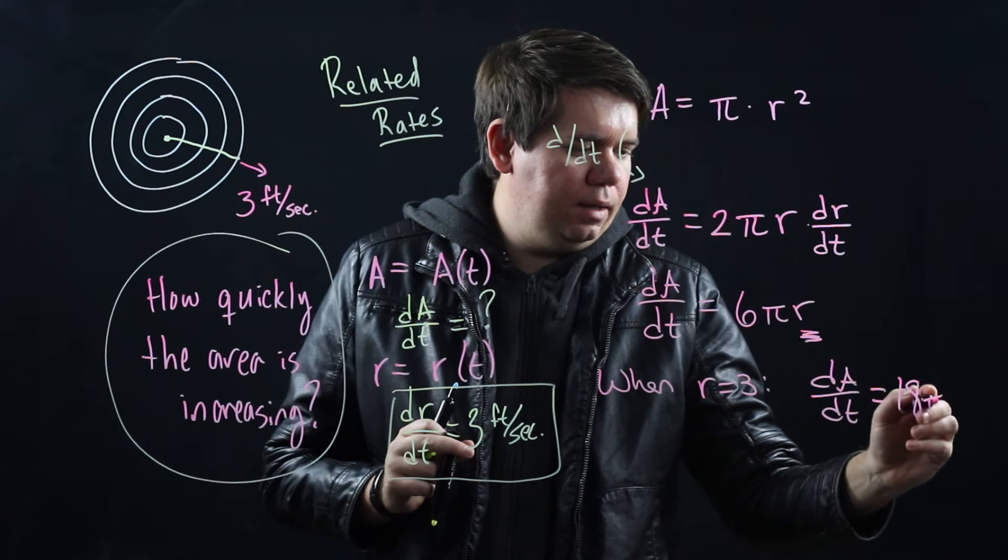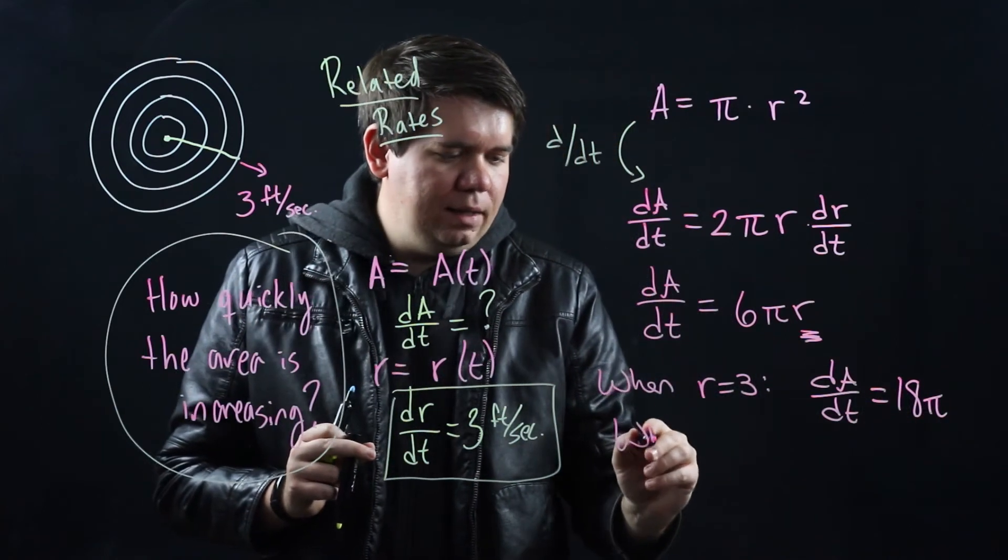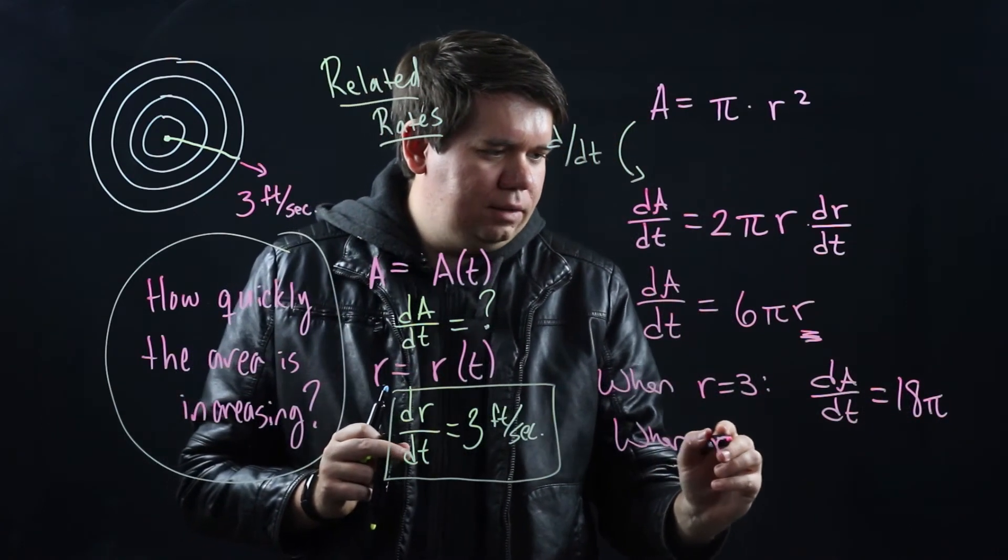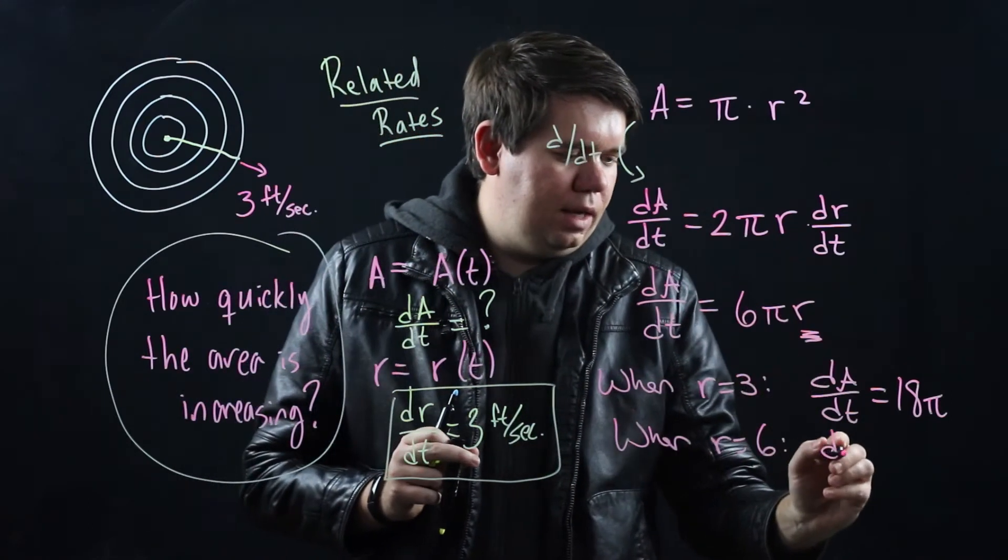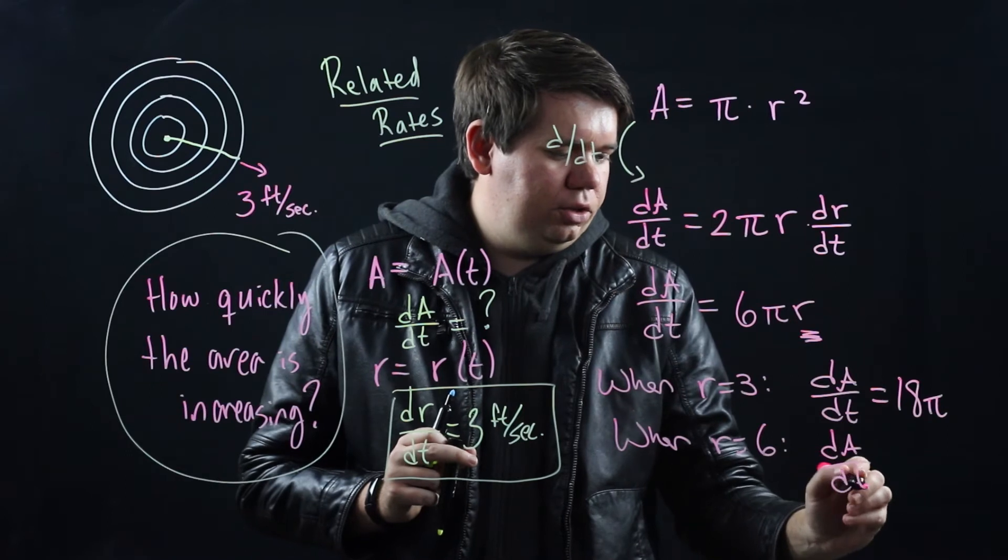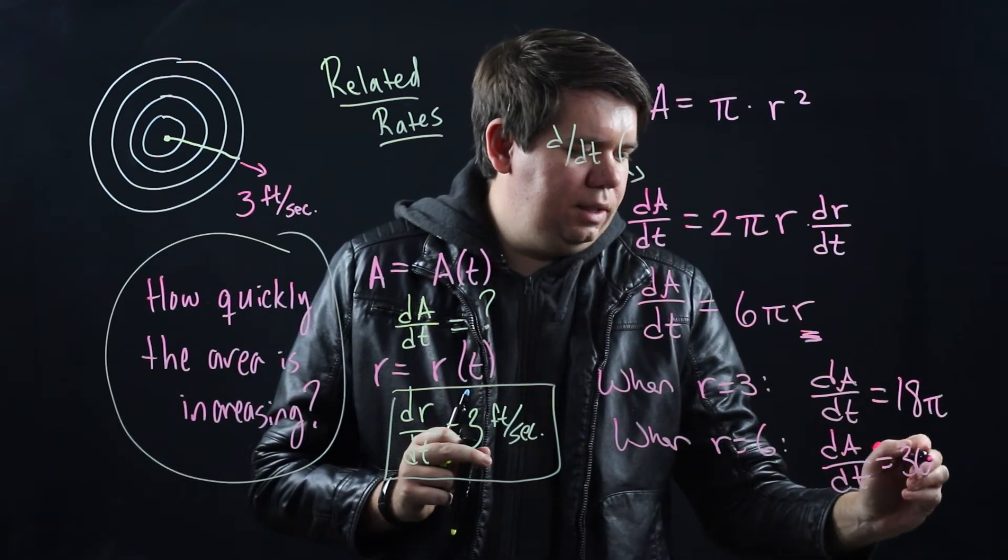But if you would wait another second, when your radius goes up to 6, now your radius is 6, so you have your dA/dt, the change in your area is 36π.